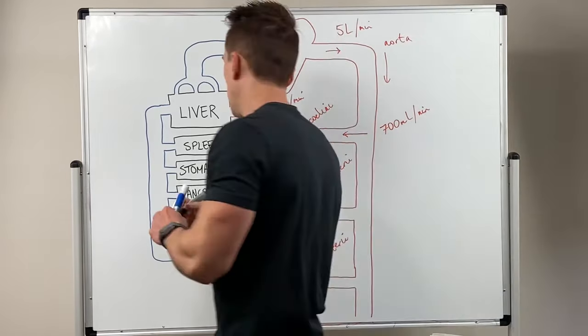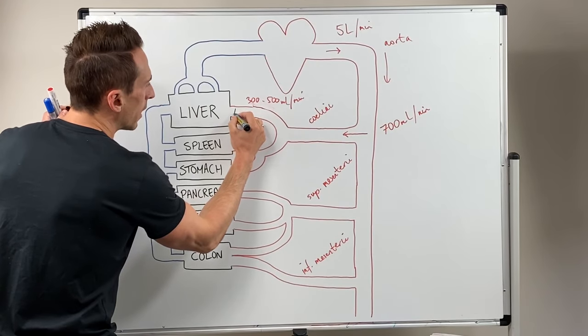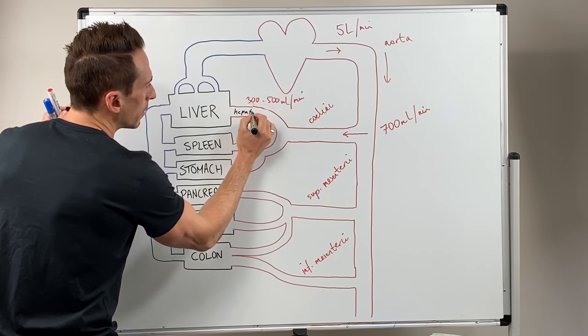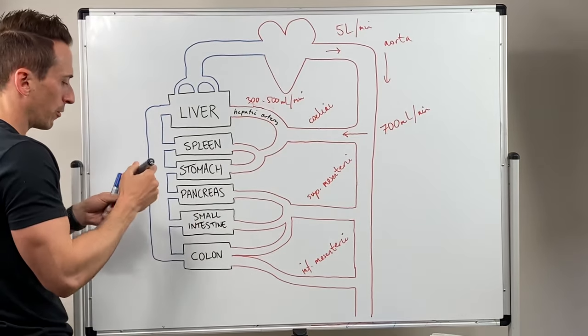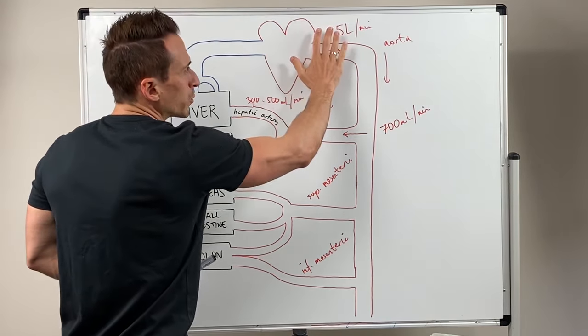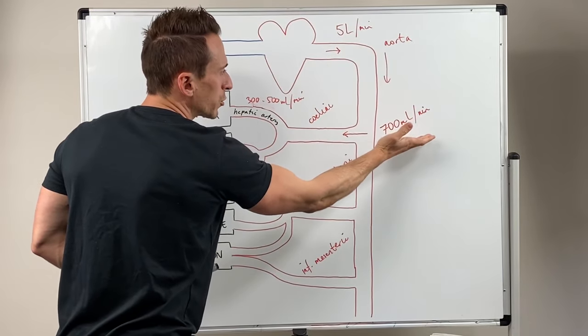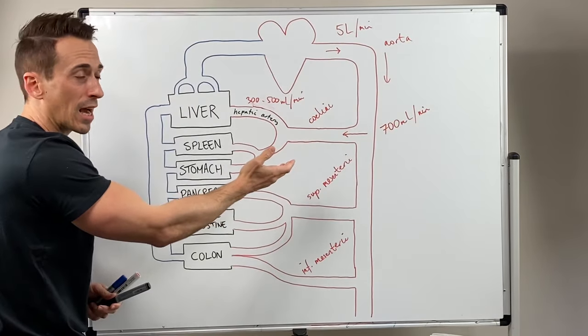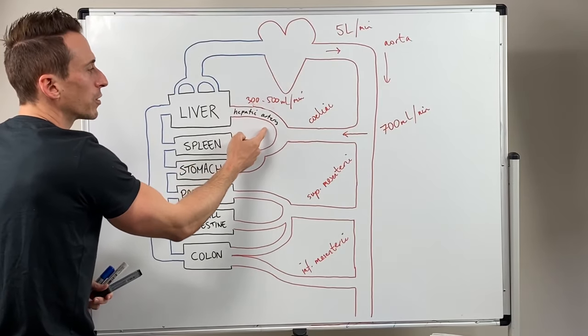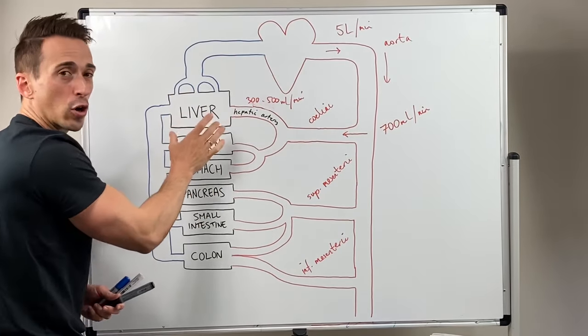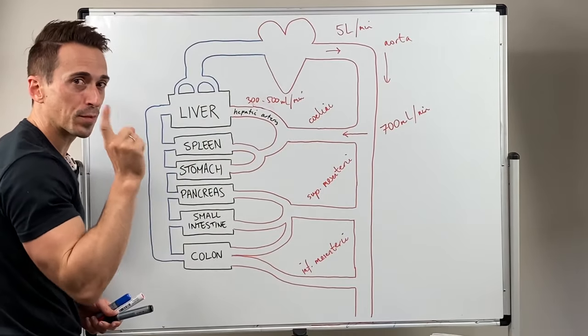Now the name of this particular artery is called the hepatic artery. So, five liters per minute coming down the aorta, 700 mils per minute going into the celiac artery. Of that 700 mils, around about 300 to 500 goes through the hepatic artery and gives oxygen and nutrients to the liver.